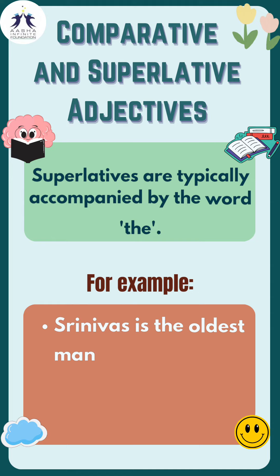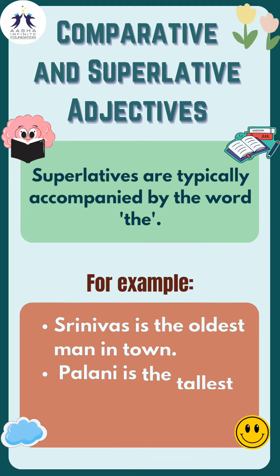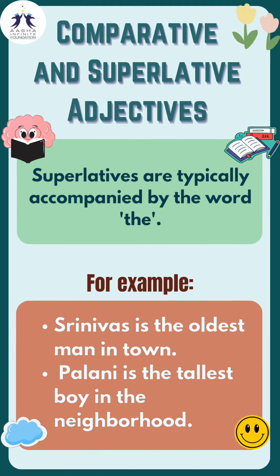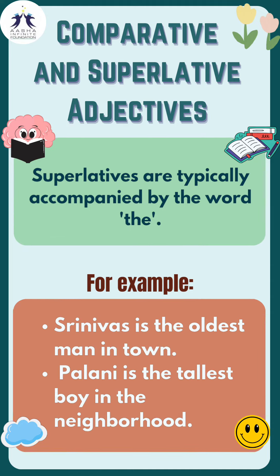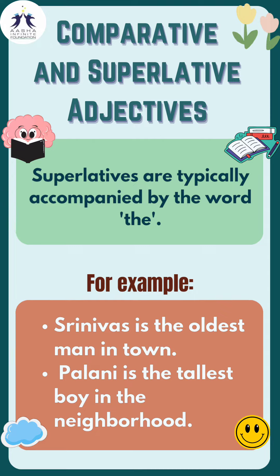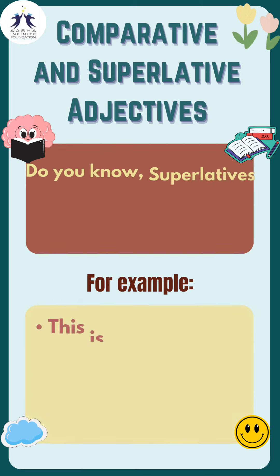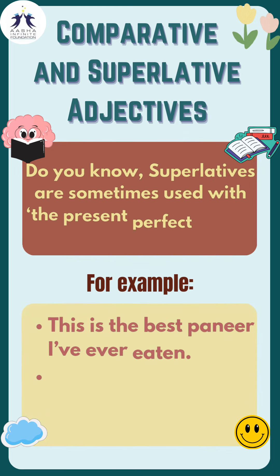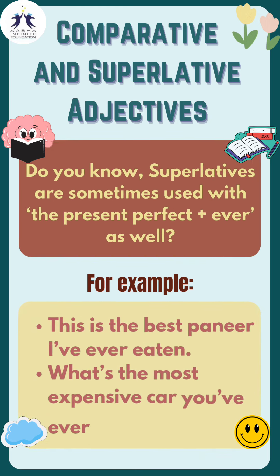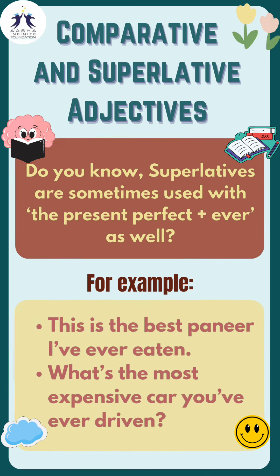Superlatives are typically accompanied by the word 'the'. For example: Srinivas is the oldest man in the town. Palani is the tallest boy in the neighborhood. Did you know superlatives are sometimes used with the present perfect plus 'ever' as well?